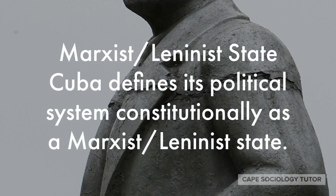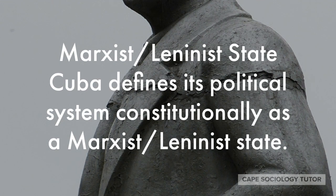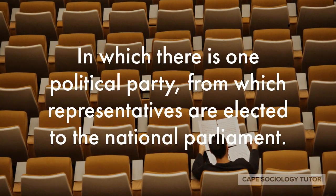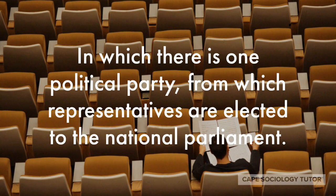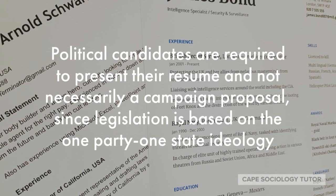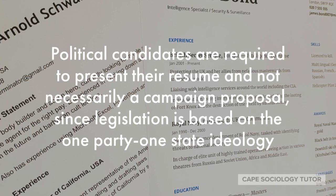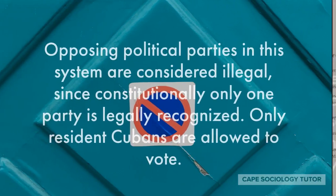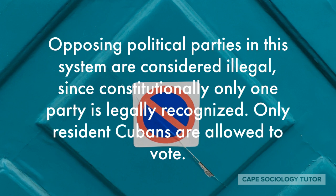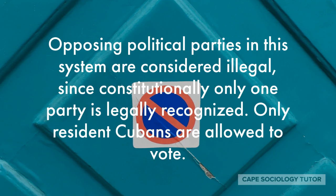Now on to the Marxist-Leninist state. Cuba defines its political system constitutionally as a Marxist-Leninist state. In such a state there is one political party from which representatives are elected to the national parliament. Political candidates are required to present their résumé and not necessarily a campaign proposal, since legislation is based on the one-party, one-state ideology. Opposing political parties in this system are considered illegal, since constitutionally only one party is legally recognized. Only resident Cubans are allowed to vote.